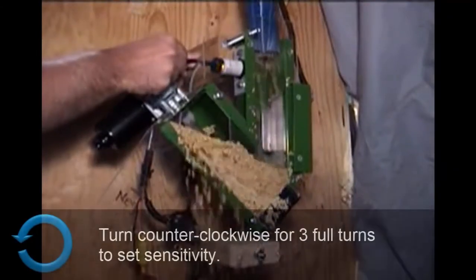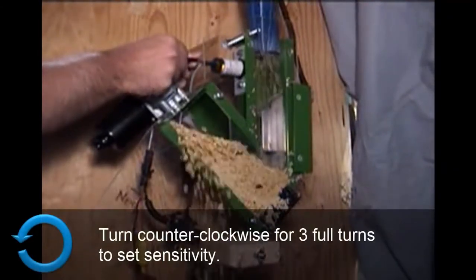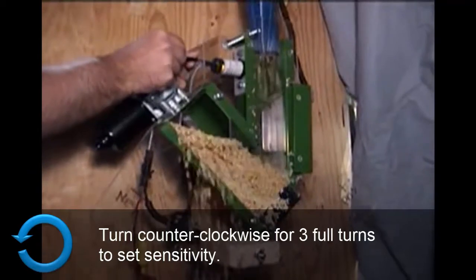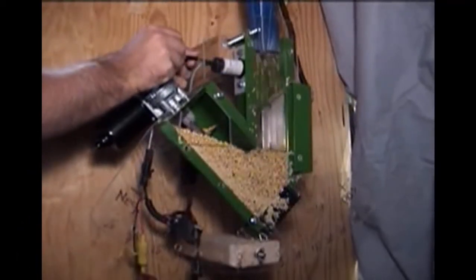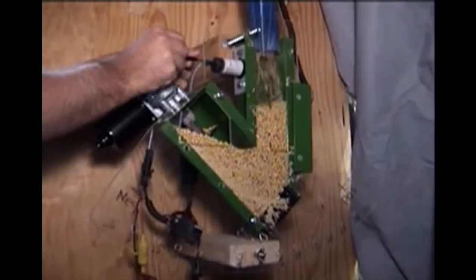Next, turn the adjustment screw counterclockwise three full turns. The sensitivity should now be correct and the auger motor should only come on when grain is in front of the sensor.